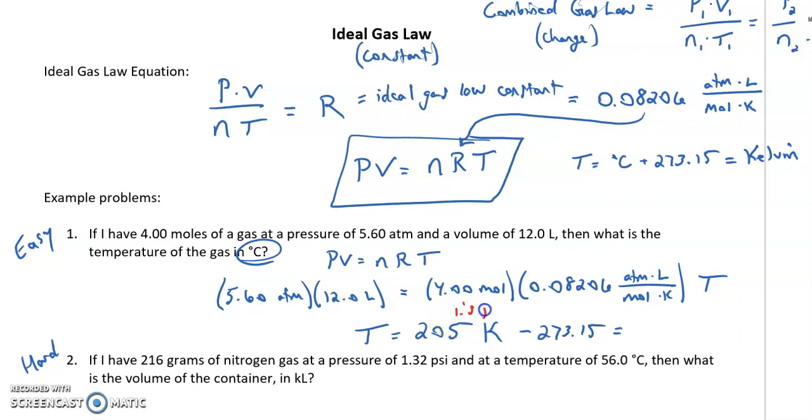So I'm going to subtract 273.15 and I want to keep my same number of place values. So I'm in the ones place. So my final answer needs to be rounded to the ones place as well, which would get me negative 68 degrees Celsius. And that would be my final answer for the temperature of this gas. Celsius can be negative. Remember, it's Kelvin that will never be a negative value.